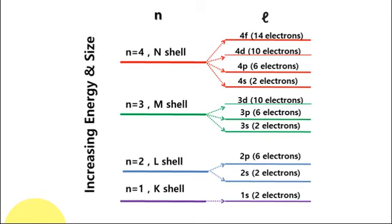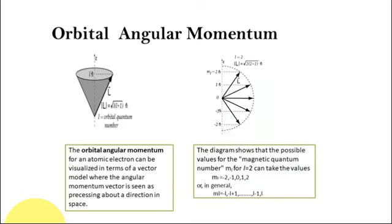You can see the increasing energy and size. When n equals 4, the energy levels and electronic configuration are written as: 1S, 2S, 2P, 3S, 3P, 3D, 4S, 4P, 4D, 4S — showing the ordering of orbitals by energy.